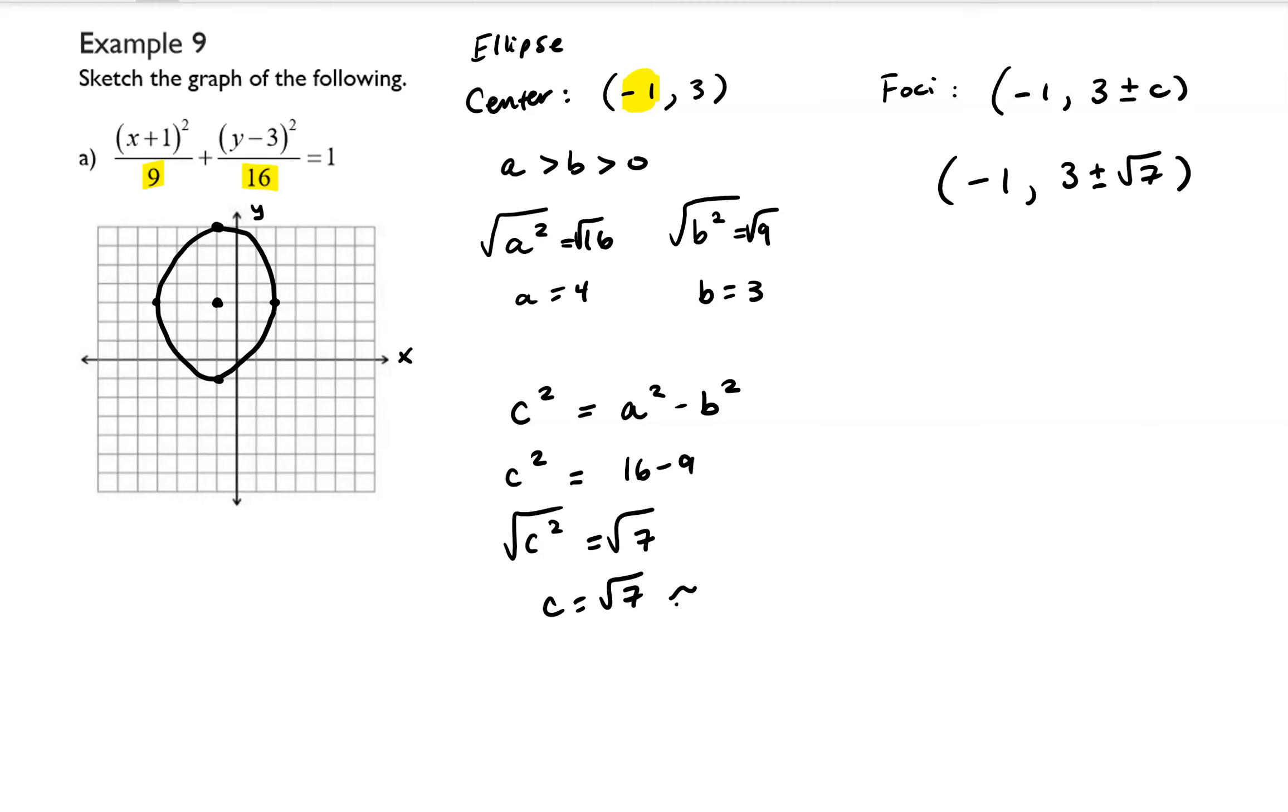And it might be helpful to know that the square root of 7 is approximately 2.7. So if I start at the center and I move up 2.7, that's going to be about right here. And if I move down 2.7, that's going to be about right there. So those are my foci. It didn't ask for the foci, but just wanted to identify them so that you know how to do that.